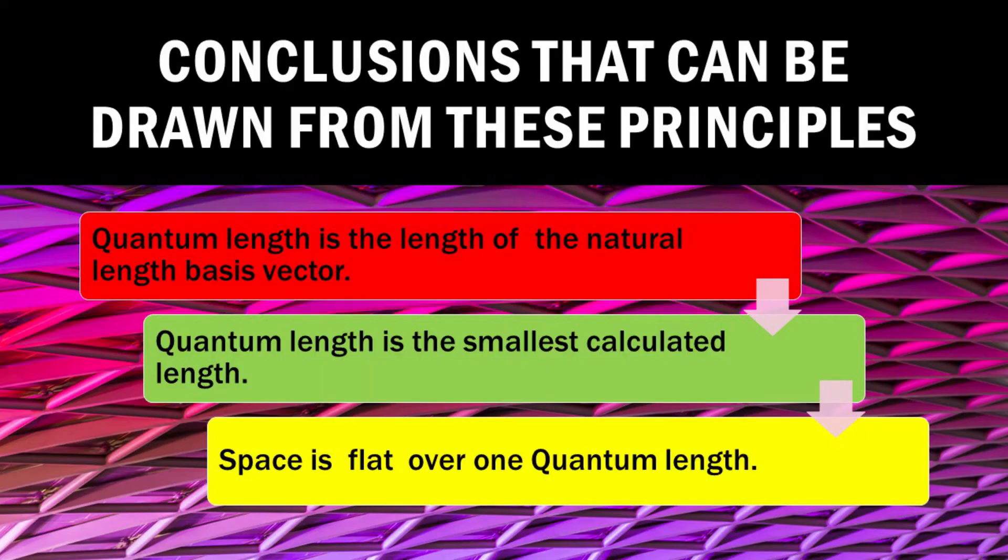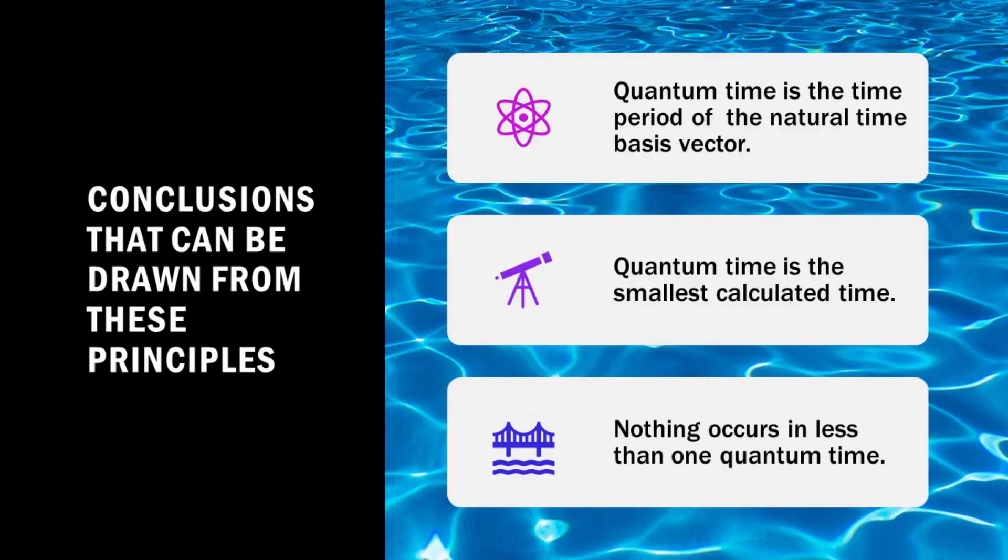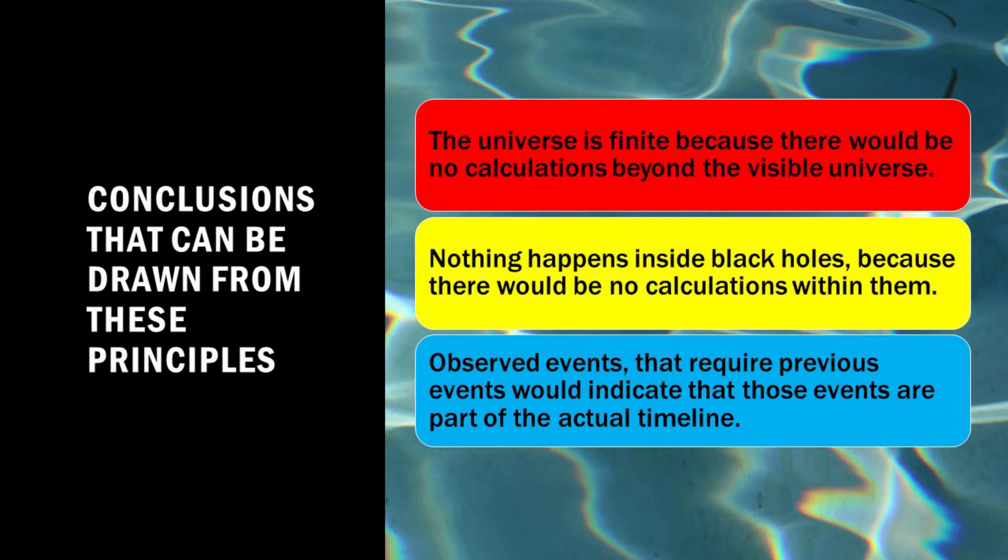Some conclusions can be drawn from these principles. Quantum length is the length of the natural length basis vector, the smallest calculated length, and space is flat over one quantum length. Quantum time is the time period of the natural time basis vector, the smallest calculated time, and nothing occurs in less than one quantum time. The universe is finite because there would be no calculations beyond the visible universe. Nothing happens inside black holes because there would be no calculations within them. Observed events that require previous events would indicate that those events are part of the actual timeline.